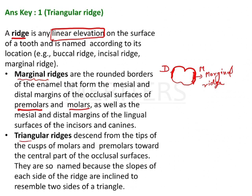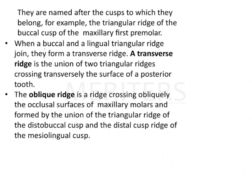The triangular ridge, as already explained, descends from the tips of the cusp of the molars and premolars towards the central part of the occlusal surface. We call it a triangular ridge because this elevation divides the cusp into two sides of a triangle — basically a pyramidal shape. That's why we call it a triangular ridge.